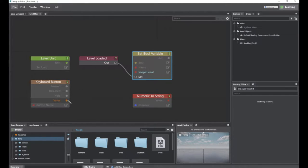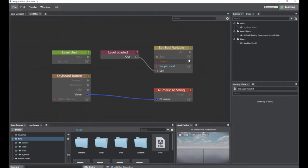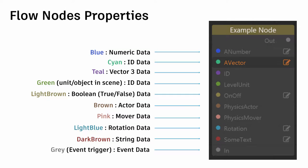Once you have nodes, you can connect them together using nodes of the same color. Nodes have different properties indicating the type of data they handle. Some are numerical for inputting numbers and doing calculations, some are vectors, and some are called units — meaning you have a 3D unit in the scene that you can call in as a node.